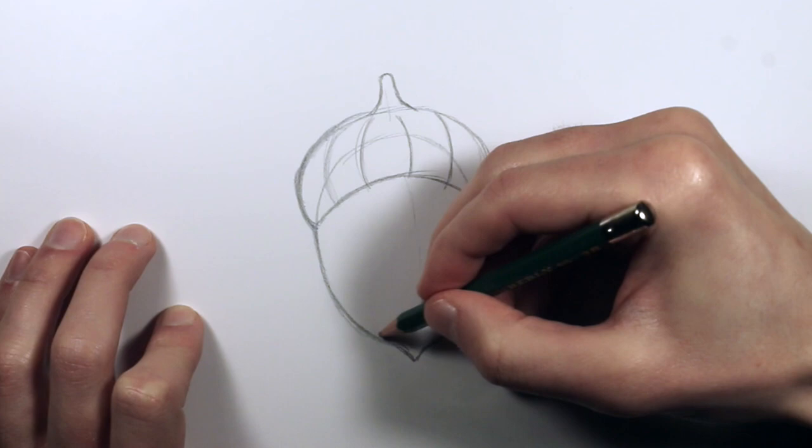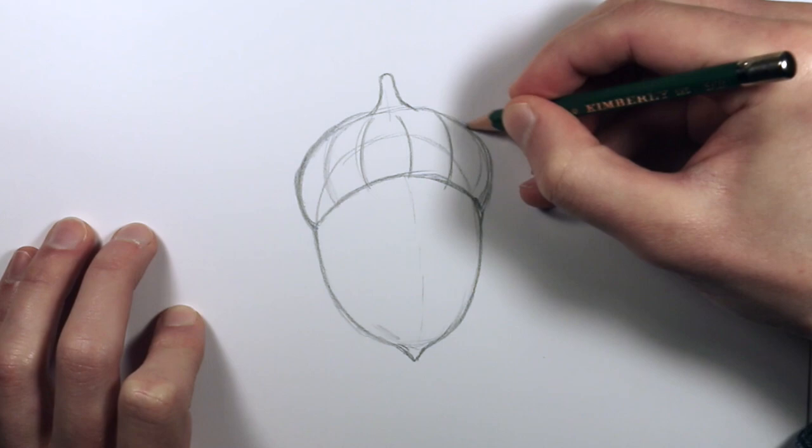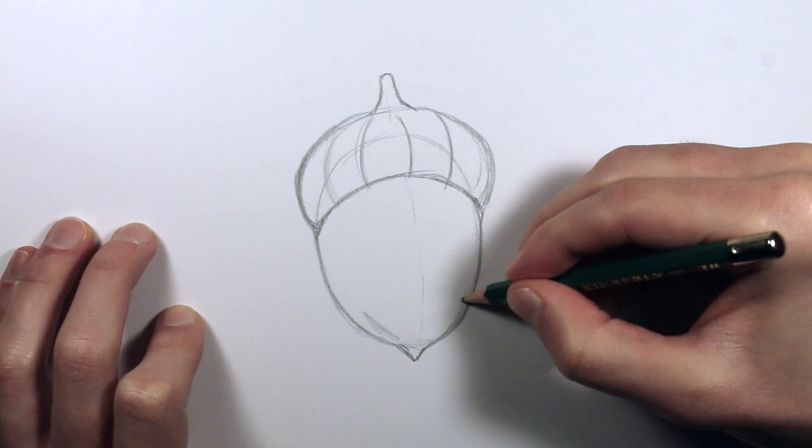And that's the basic foundation of the acorn. Now of course you can clean it up with an eraser, go over it with a pen, color it. But this is the basic structure of your acorn.